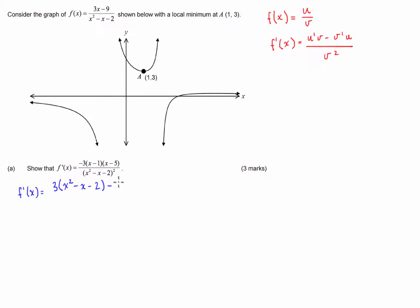Subtract the derivative of the denominator. Now I'm assuming that you guys know how to do these derivatives, which is equal to 2x minus 1, multiplied by the top, 3x minus 9, all divided by the bottom part, the denominator squared.